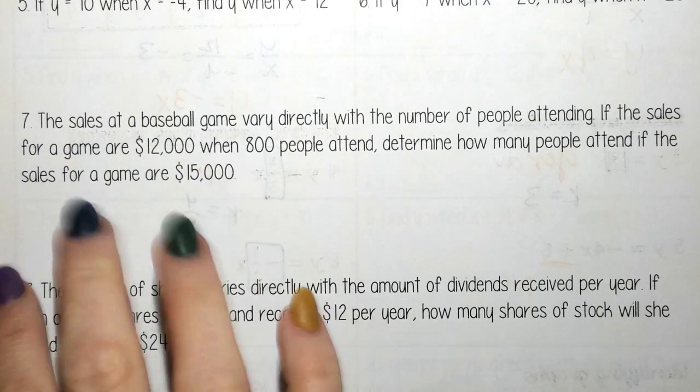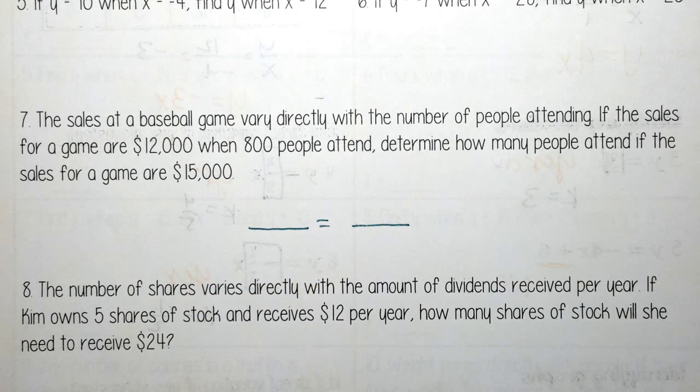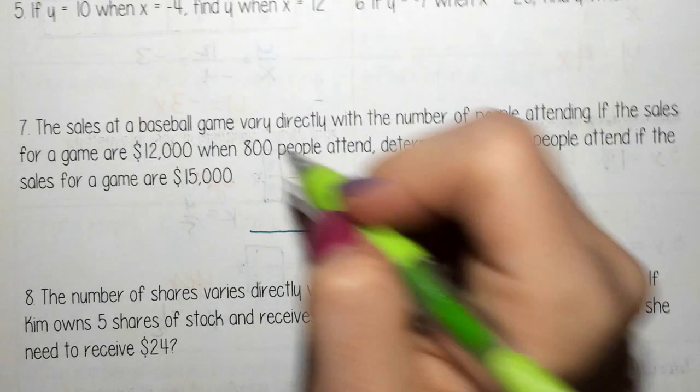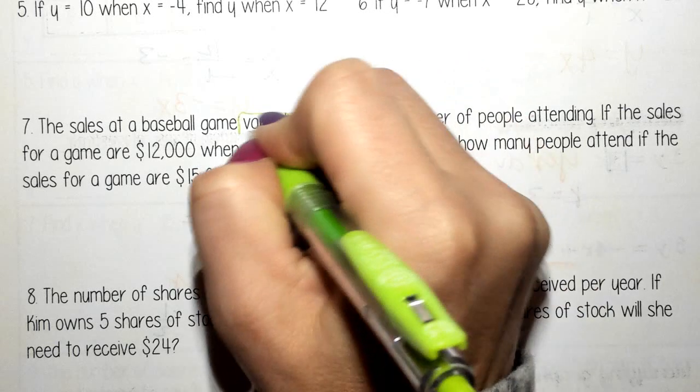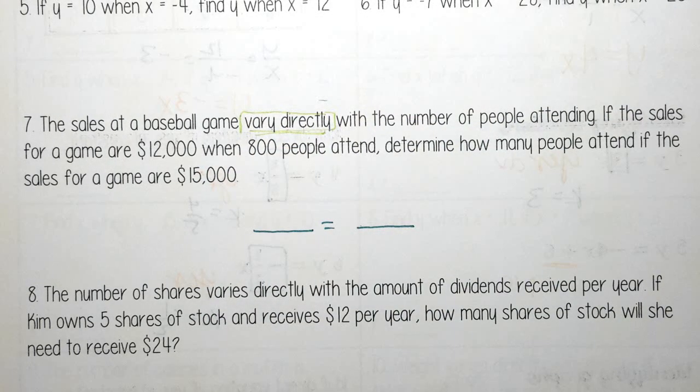So on our word problems, we're going to be doing the same thing. We're still going to be setting up our proportion. And we know it's a proportion word problem because of this word right here. Varies directly. It literally tells us that it is a direct variation.